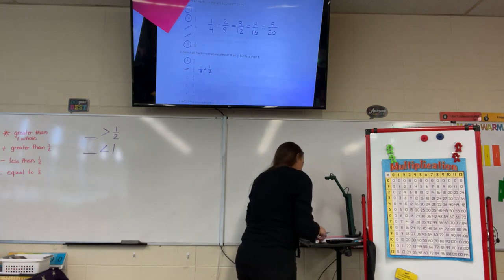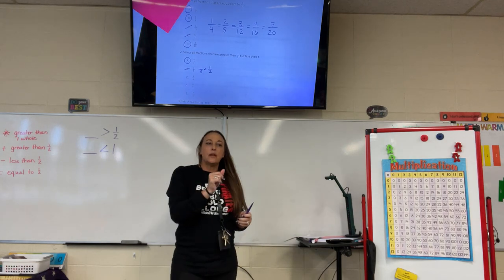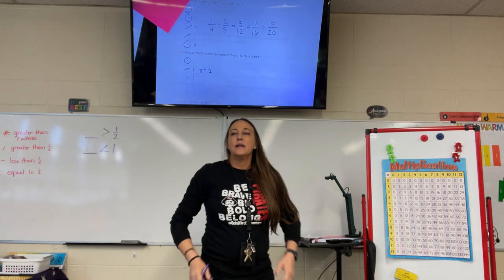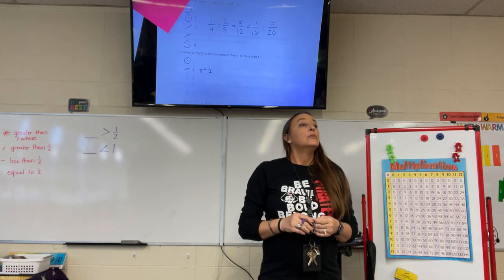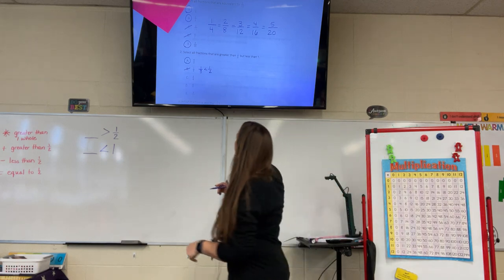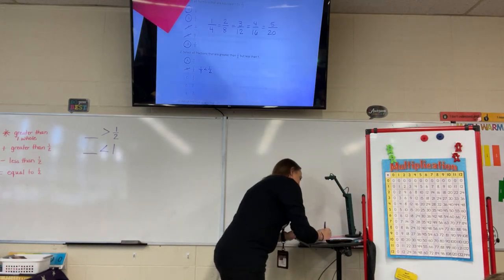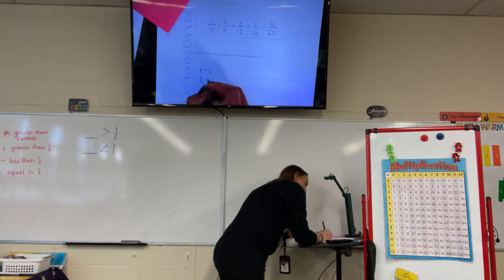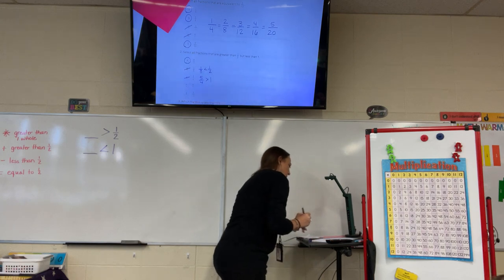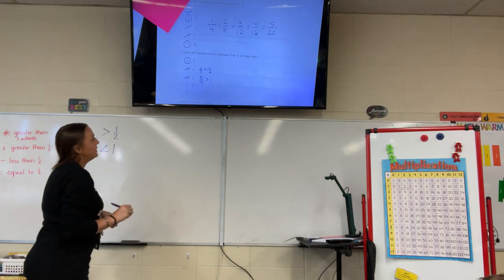On the next one, we have 5/4. That one's automatically out for another reason. Olivia says because 5 is more than 4 — the numerator is bigger than the denominator. So 5/4 is greater than one whole, and we want fractions less than one whole.